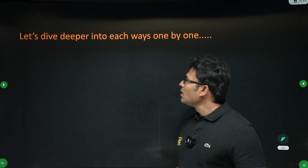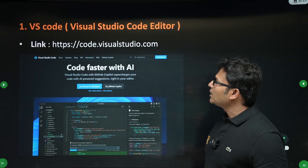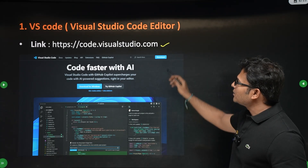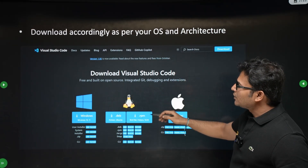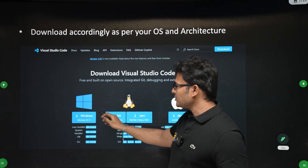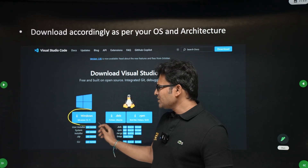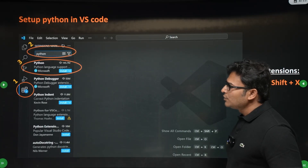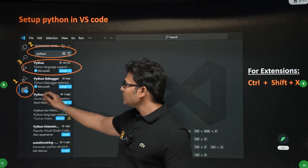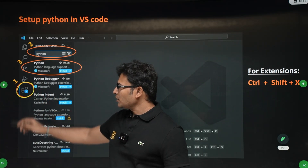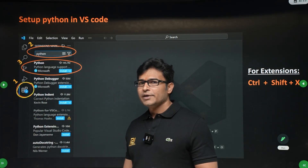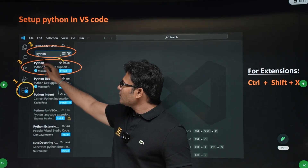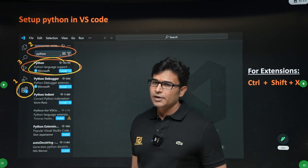To install VS Code, go to this link and click on Download, then download according to your operating system. You can check the slides — I'm not explaining it here. Once you download it, open it and there is something called plugins. Just type Python and you will get the Python plugin, then install that plugin.